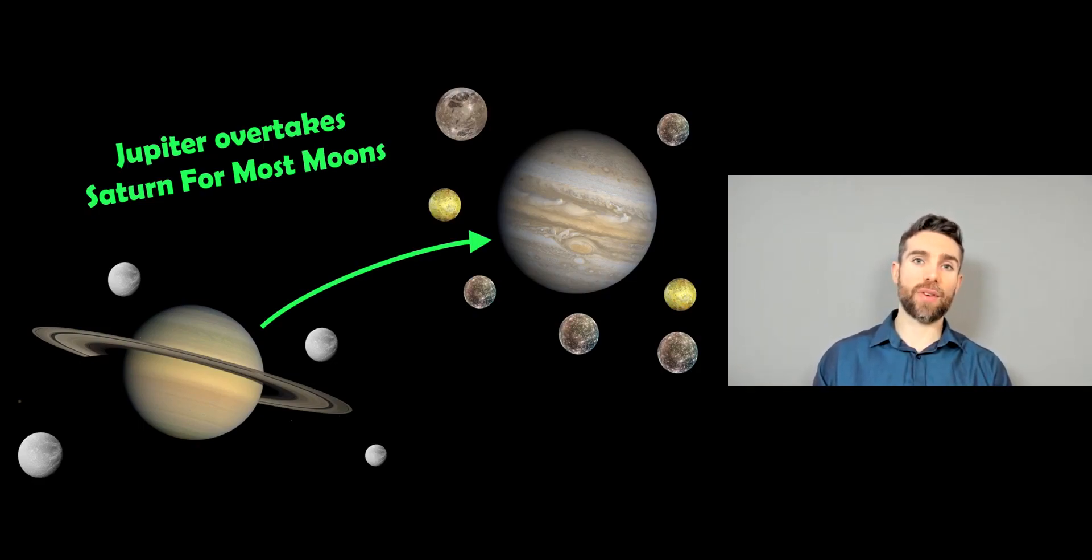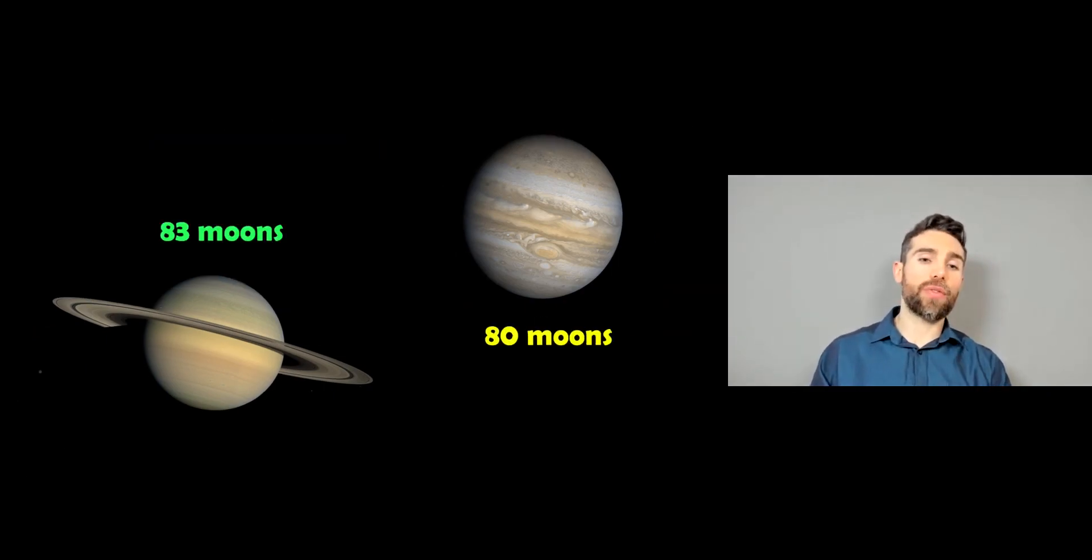Welcome to this video where we're going to have a look at some of the new moons that have been discovered around Jupiter. Now before they were discovered, it was actually Saturn that had the most moons. It had 83, while Jupiter only had 80.